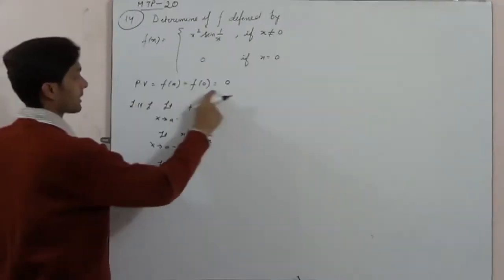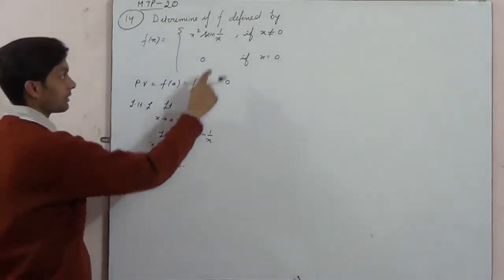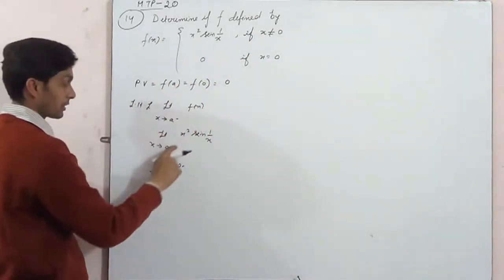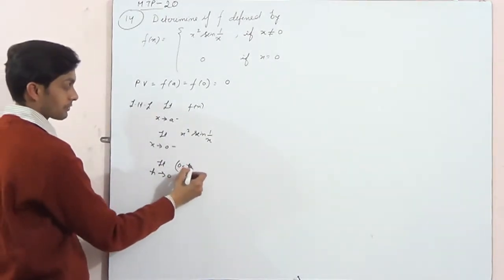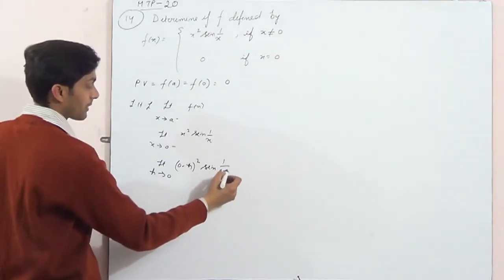This function continuous proof: point zero point value, left hand limit not equal to... left hand we use zero negative x here, 0 minus h square sine 1 by 0 minus h.